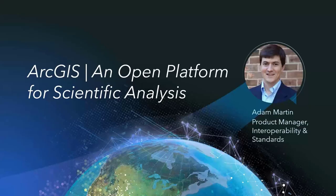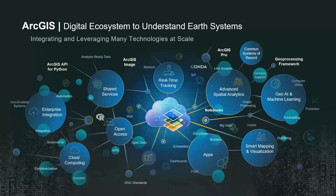Hi everybody. I'm going to provide a quick overview of what ArcGIS is at a high level, what it means for ArcGIS to be an open platform, and why we think that matters. Then I'll hand it off to the real data scientists on the call to show some of these examples in action. ArcGIS is a rich digital ecosystem that powers the science of where — providing geospatial infrastructure and tooling to support end-to-end workflows for earth observation analysis, from data management to analysis to collaboration and sharing.